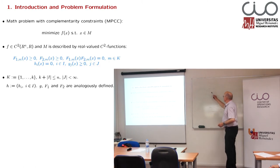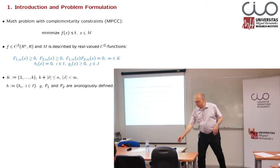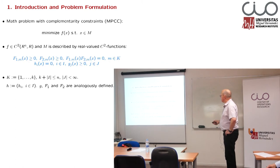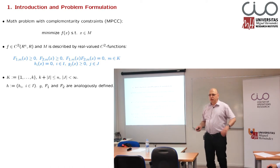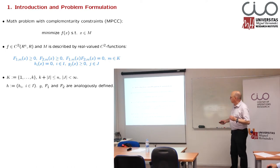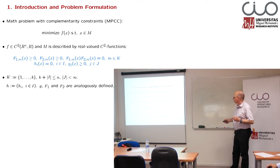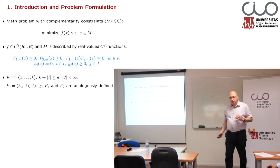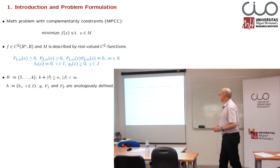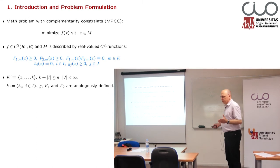Instead of looking at variables only, we are assuming that we are considering functions F1_m and F2_m, where m is the index which connects both and m is varying in a finite set K. We can also assume constraints from standard optimization: finitely many equality constraints and finitely many inequality constraints. The main focus, of course, will be on these complementarity constraints — these pairs of functions whose product is equal to zero. This is the problem under consideration.